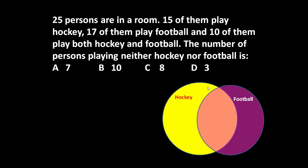Only yellow represents the students who are playing only hockey. Only red represents students who are playing only football, and the overlapping section represents those who are playing both football and hockey. If X students are playing only hockey, Y is playing only football, and Z students are playing hockey and football both, we can form different equations from the given information.